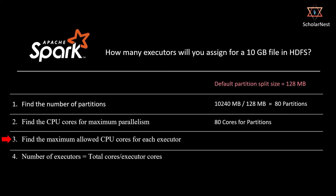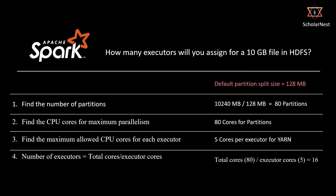What is the maximum allowed CPU cores for each executor? Since we are using HDFS, we must use YARN resource management. The recommended maximum CPU cores for a YARN cluster is 5, so we can give 5 cores to each executor. That gives us our final answer: number of executors equals total cores (80) divided by executor cores (5), which is 16 executors.